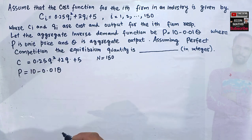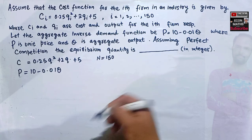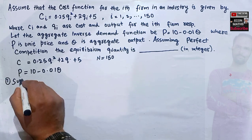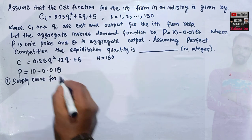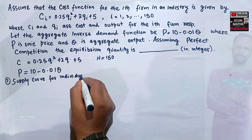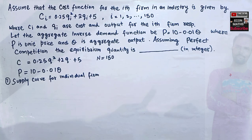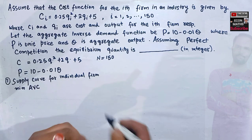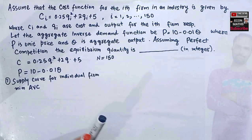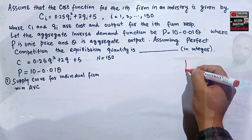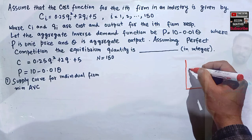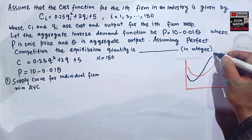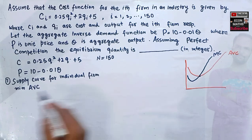The first step is to find the supply curve for the individual firm. To do this, we need to find the minimum of the average variable cost (AVC). In a perfectly competitive firm, the marginal cost curve cuts the AVC at its minimum point, so we need to find the minimum of AVC.